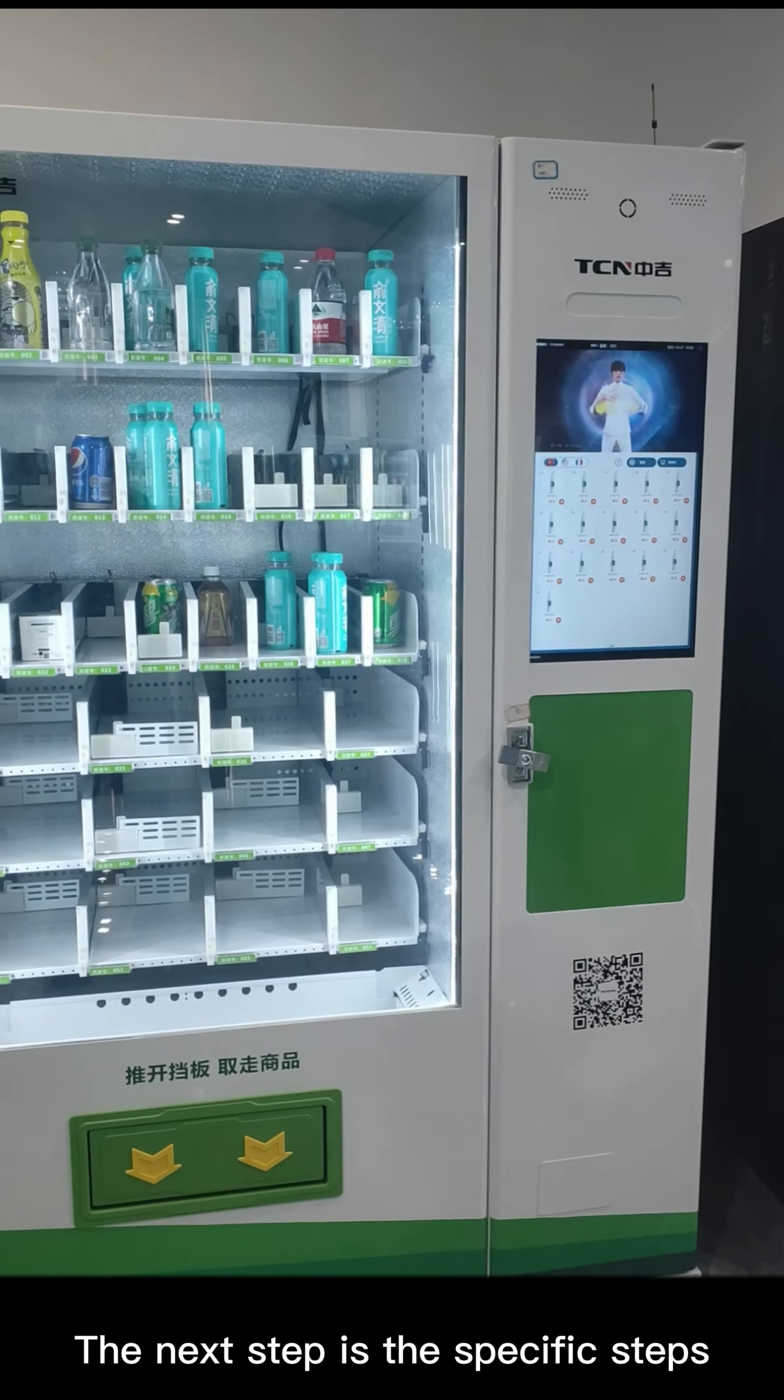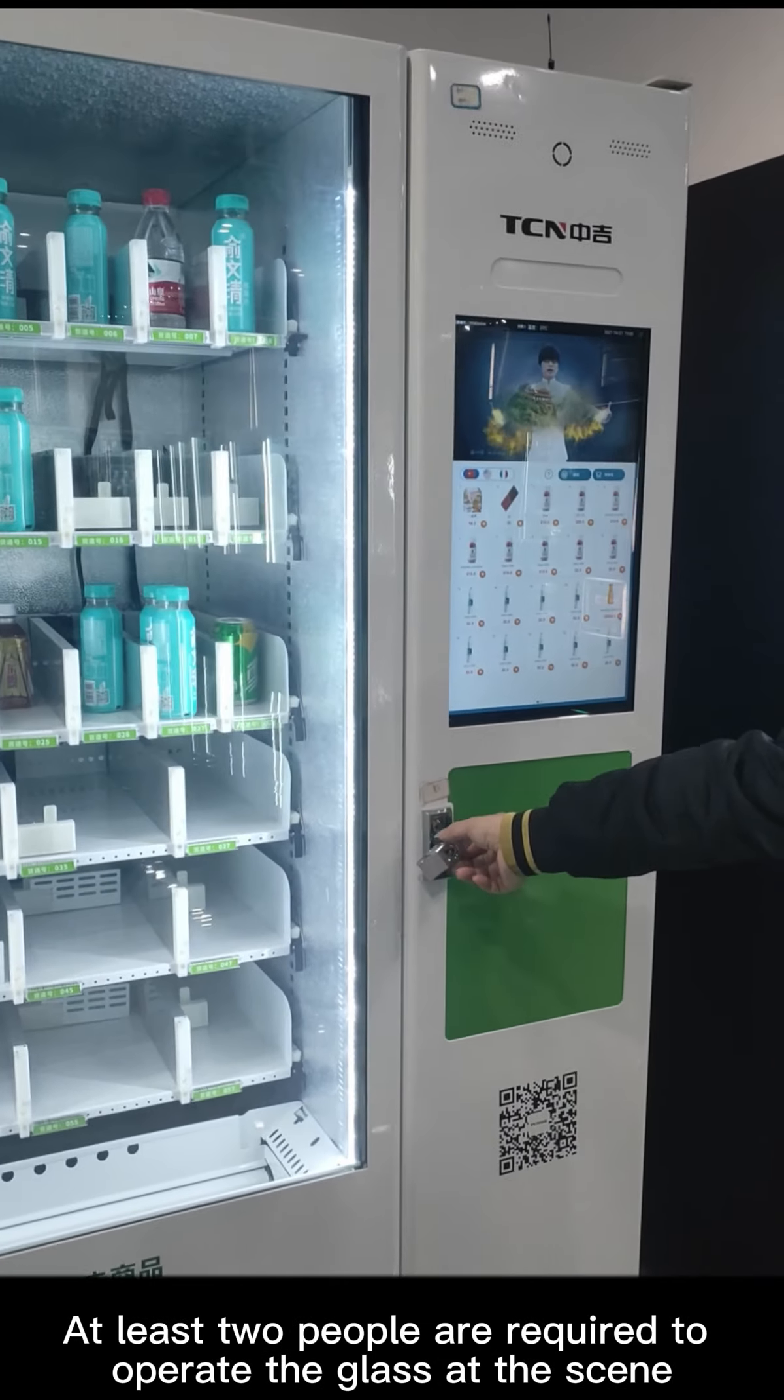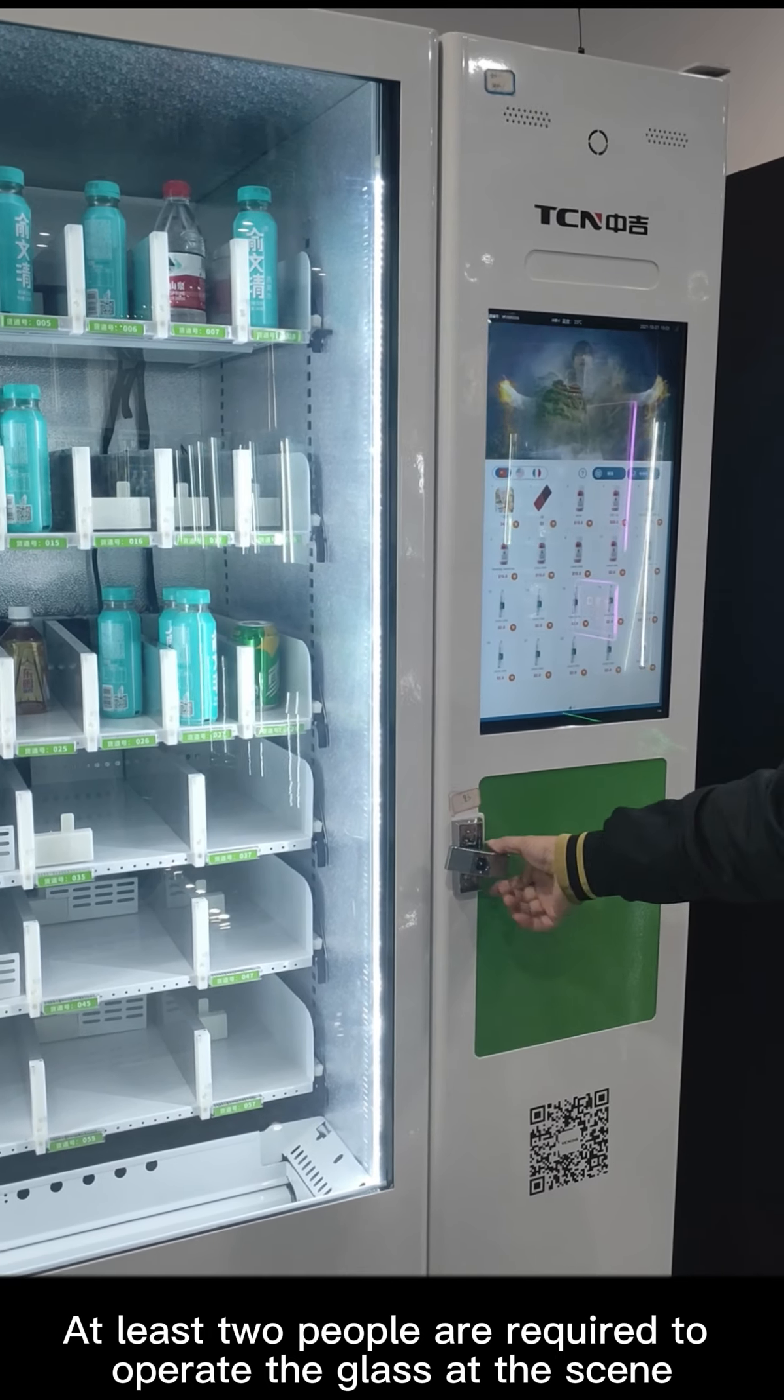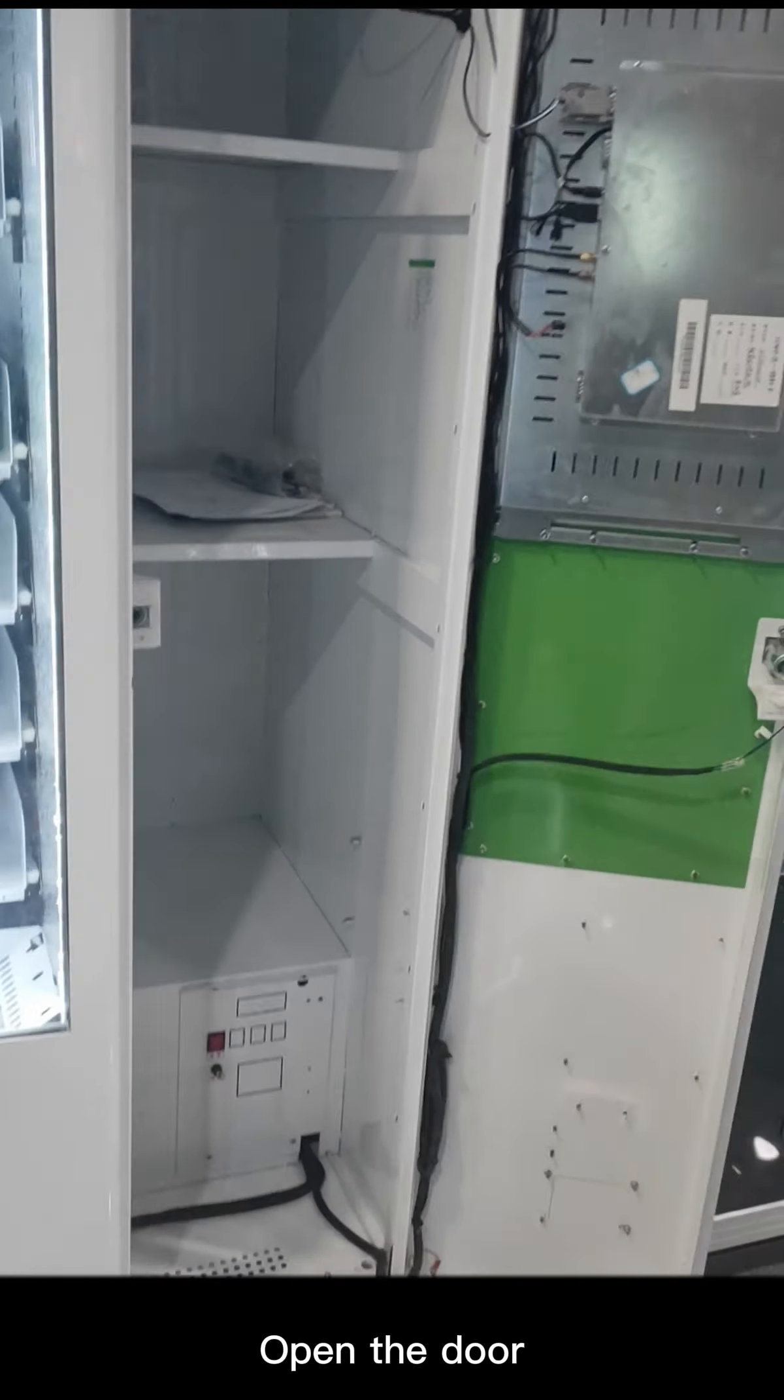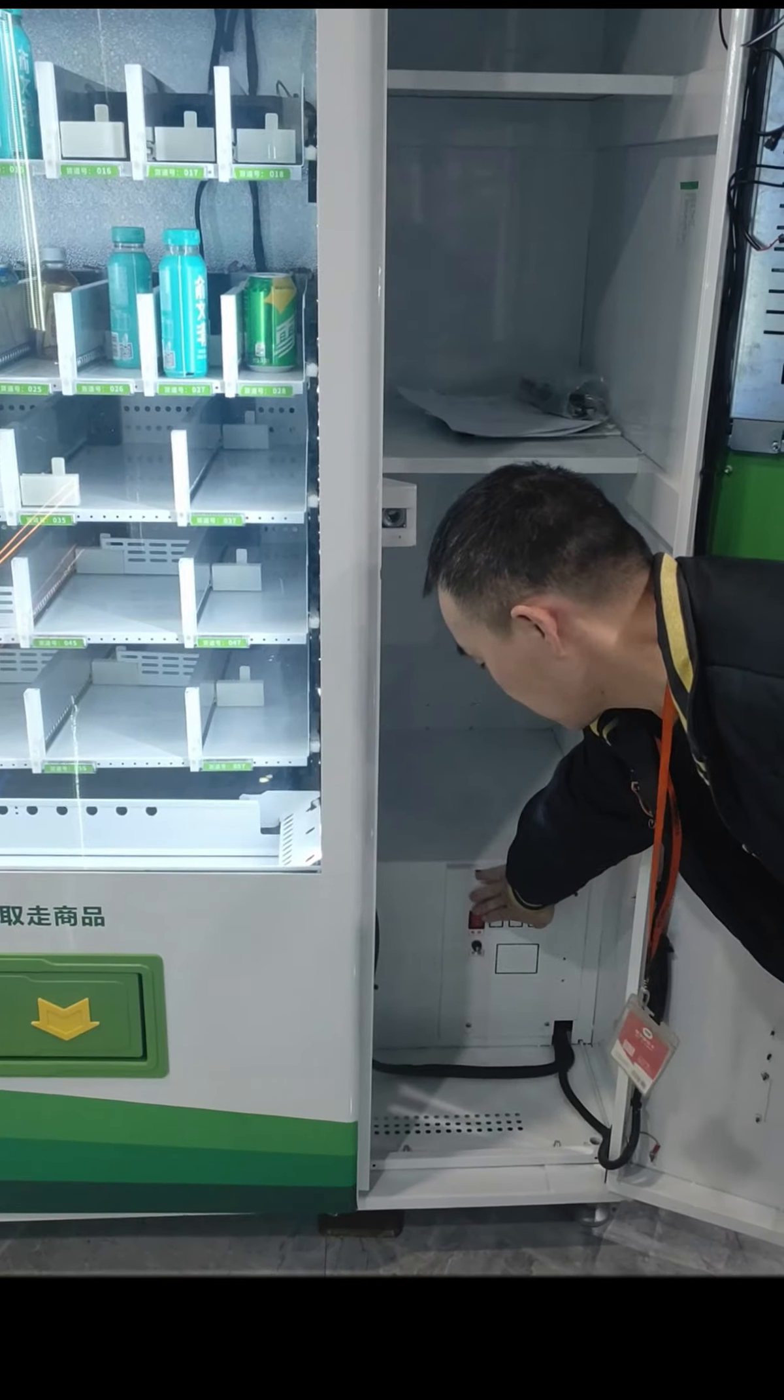The next step is the specific steps. At least two people are required to operate the glass at the scene. First, open the door, find the switch power supply, and shut down the machine.